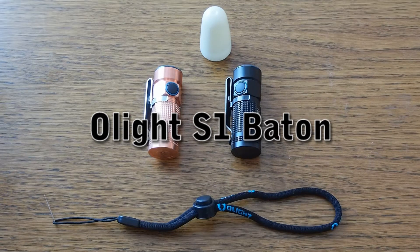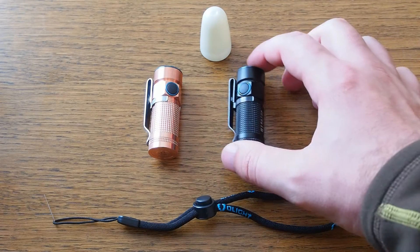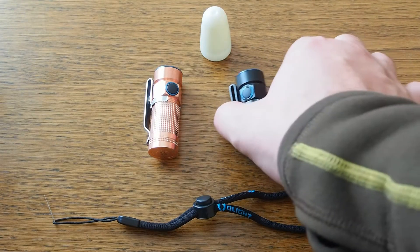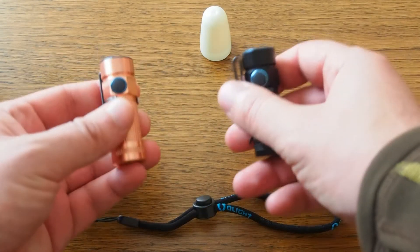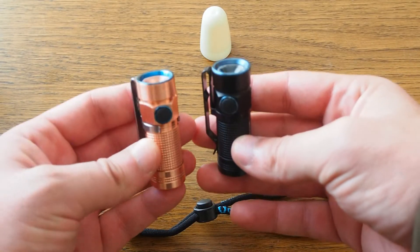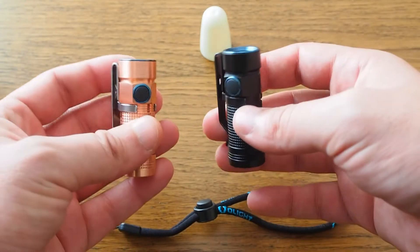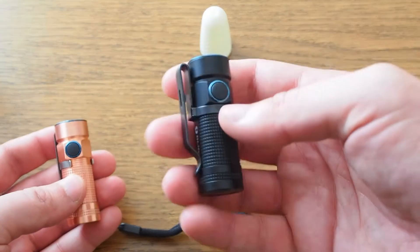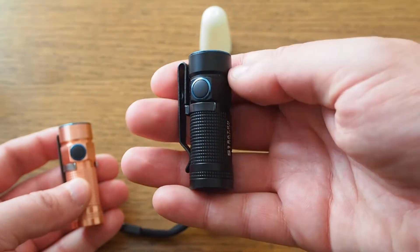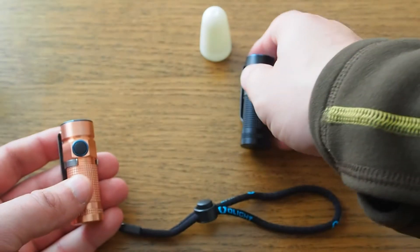Hello, today's video is about my favorite EDC flashlight, namely the Olight S1 Baton. Actually, I liked it so much that I bought two Olights of the same model, just different materials. Here's the basic aluminum version in black, and here we have the special edition.